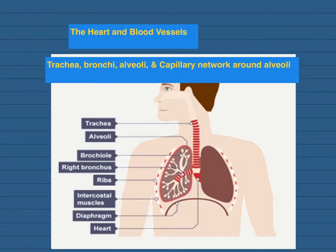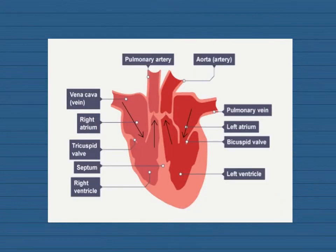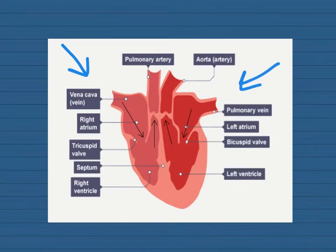When you studied cell biology, you would have looked at transport across membranes, so you probably already know a bit about alveoli from revising that section. A major part of this section is the study of the heart as an organ that pumps blood around the body in a double circulatory system. You'll need to know all the specified parts, particularly if you're doing higher tier. You don't need to know the specific names of the valves.